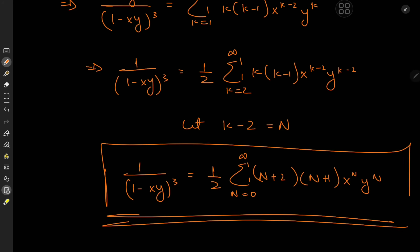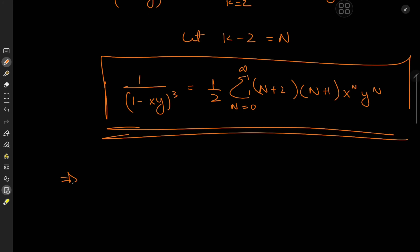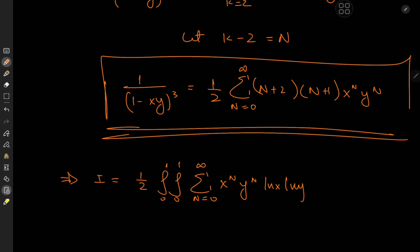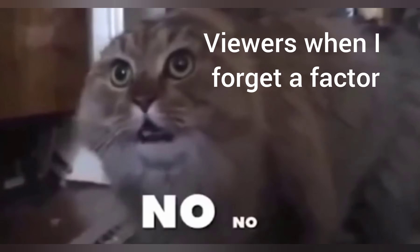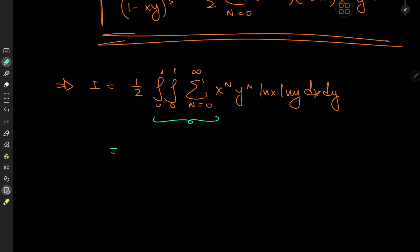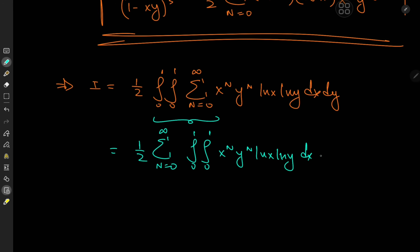This implies that the target integral I is now one half the double integral from 0 to 1 of the sum over n from 0 to infinity of (n plus 2)(n plus 1) times x to the n times y to the n times log x times log y, dx dy. We switch the order of integration and summation to get one half the sum over n from 0 to infinity of the double integral from 0 to 1 of x to the n, y to the n, log x, log y, dx dy.